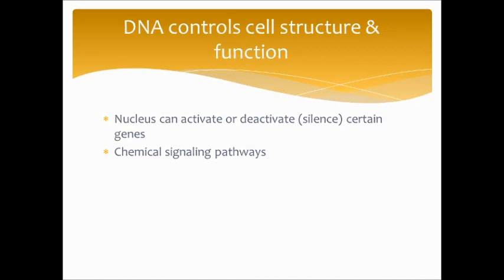The nucleus can activate or deactivate certain genes. If you have a predisposition for certain diseases, there needs to be some environmental or traumatic trigger to start that process — those genes would be turned off until that environmental trigger caused them to be turned on by the nucleus. This can happen through chemical signaling pathways, and nuclear pores are used for chemical communication within the cell.